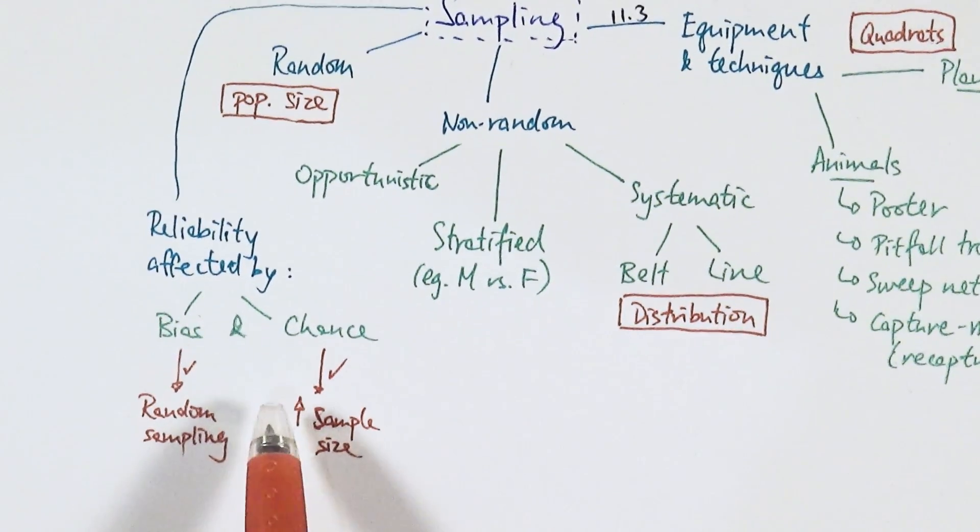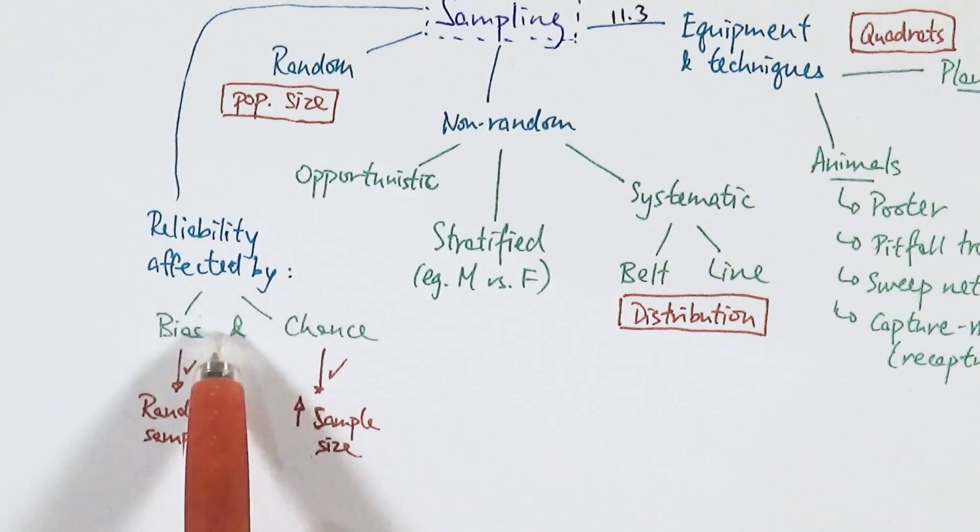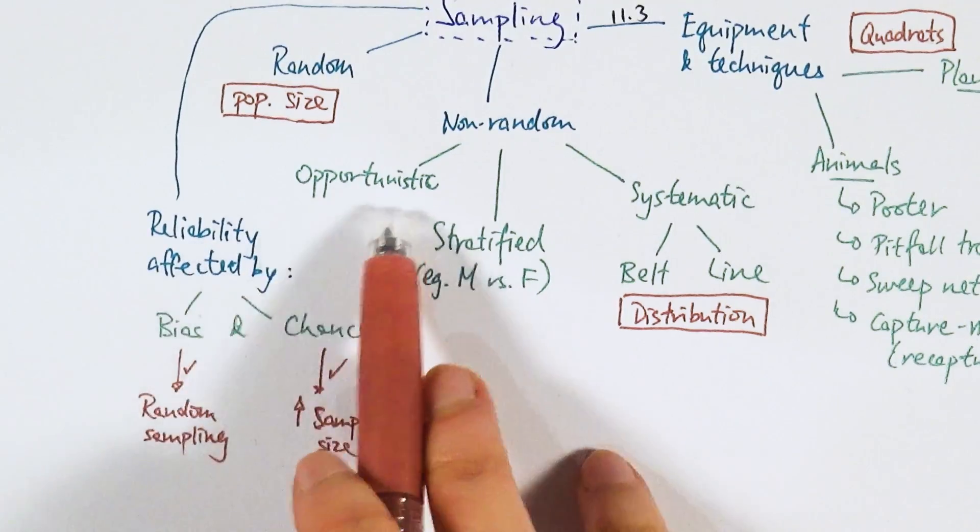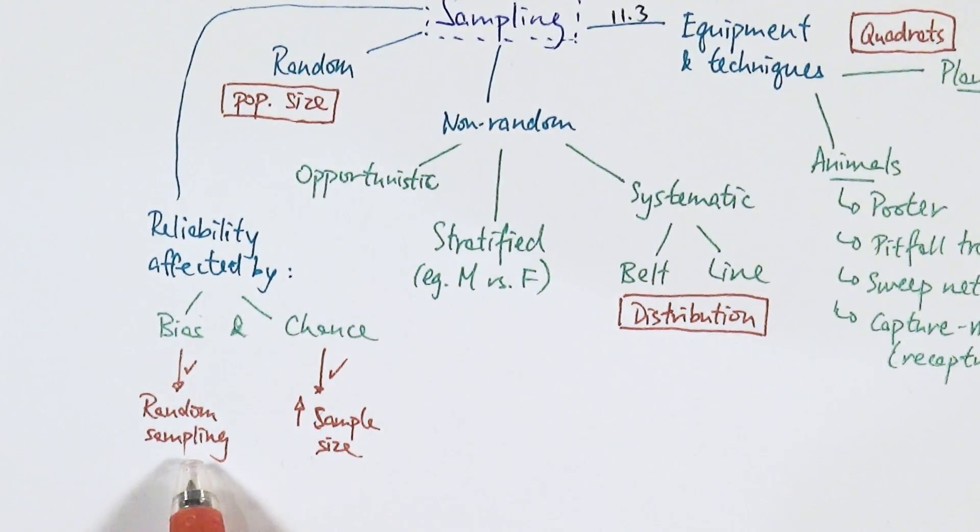We need to evaluate the reliability of our data, which is affected by bias and chance. Bias refers to what you pick to sample—opportunistic sampling is very biased. We can improve this by doing more random sampling, using a random number generator rather than asking people to pick numbers, to reduce or remove bias. Chance you can't really completely remove—it's random, by chance. The only way to reduce chance's effect is by increasing sample size, so that even if there are anomalies, we minimize their effect on the data.